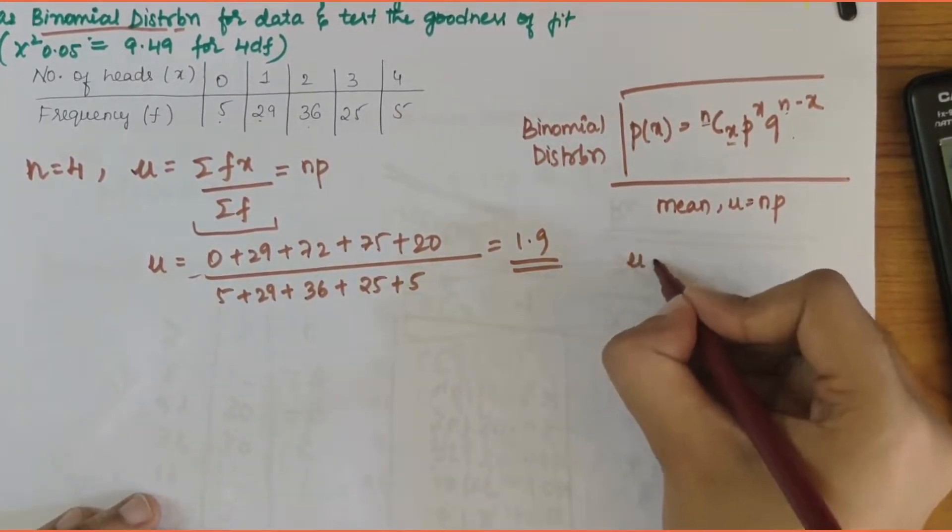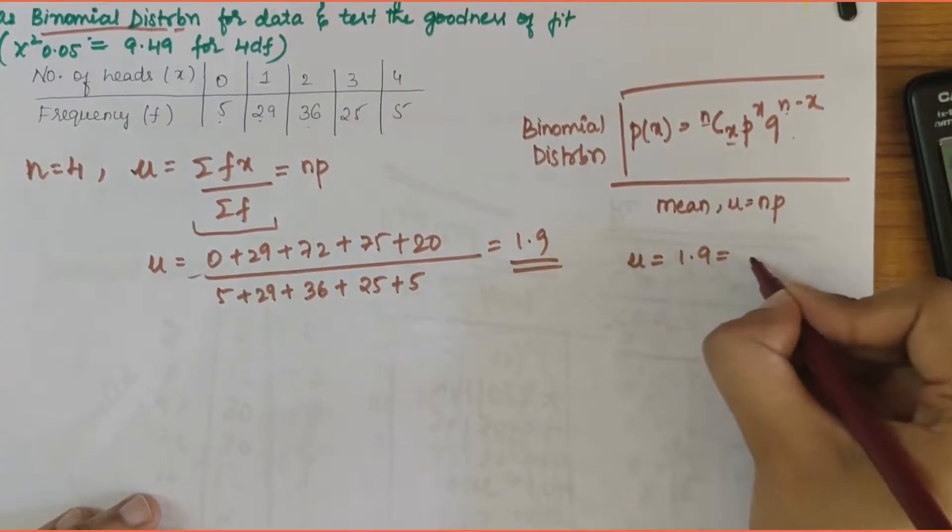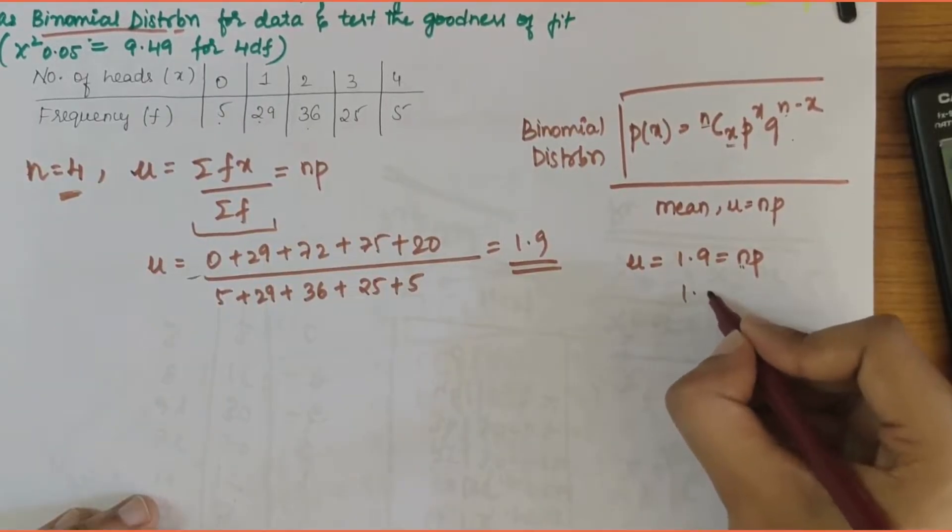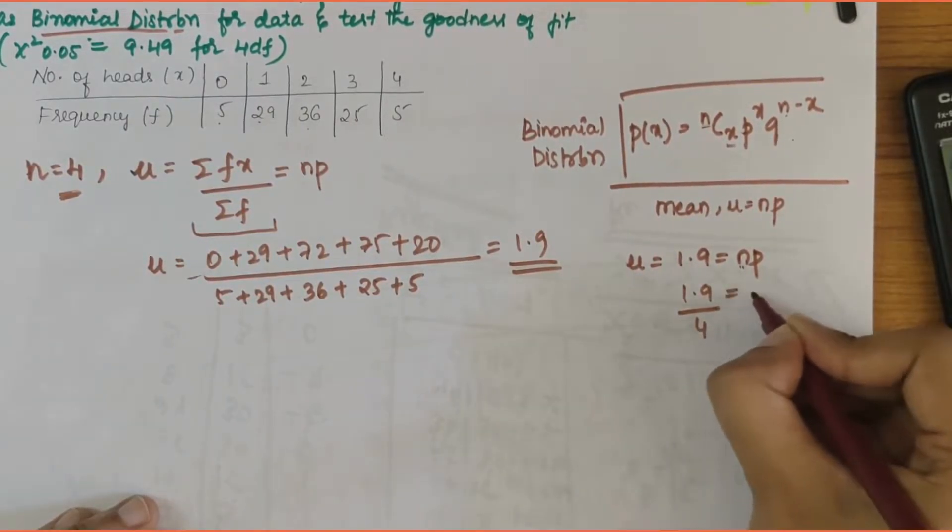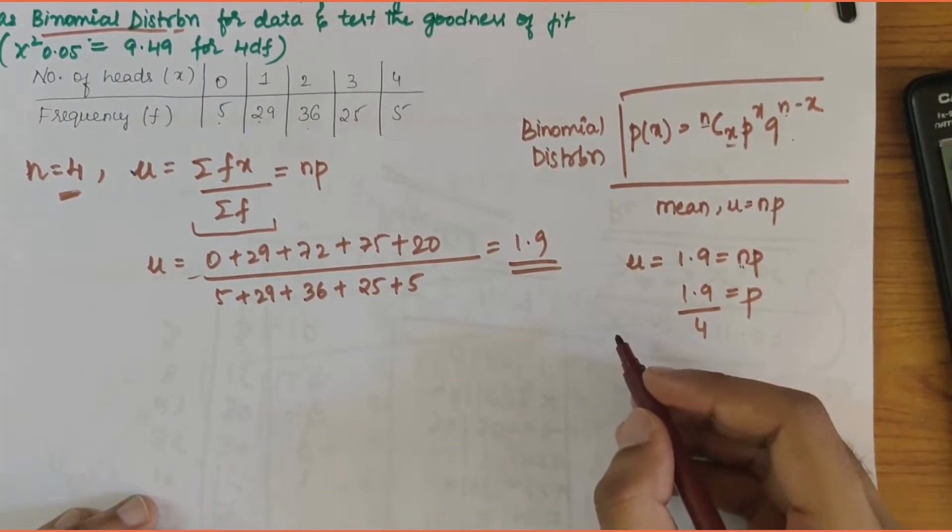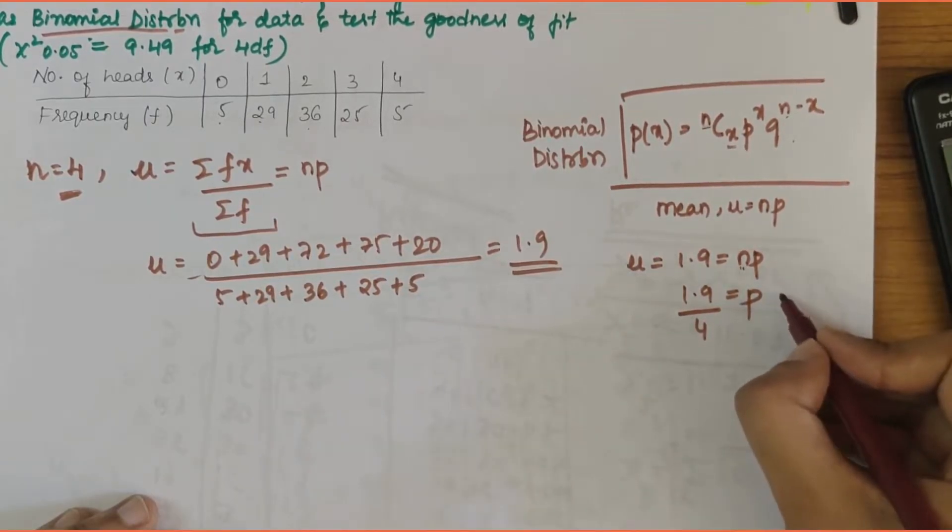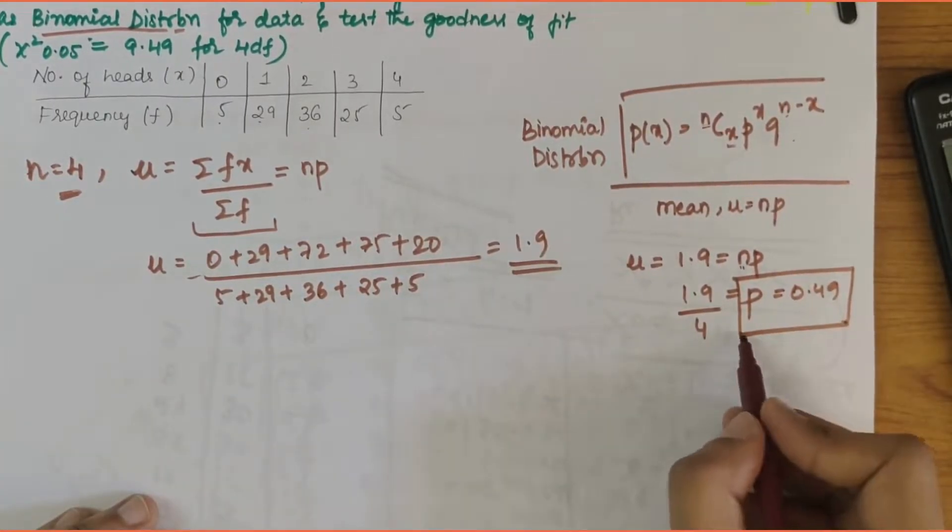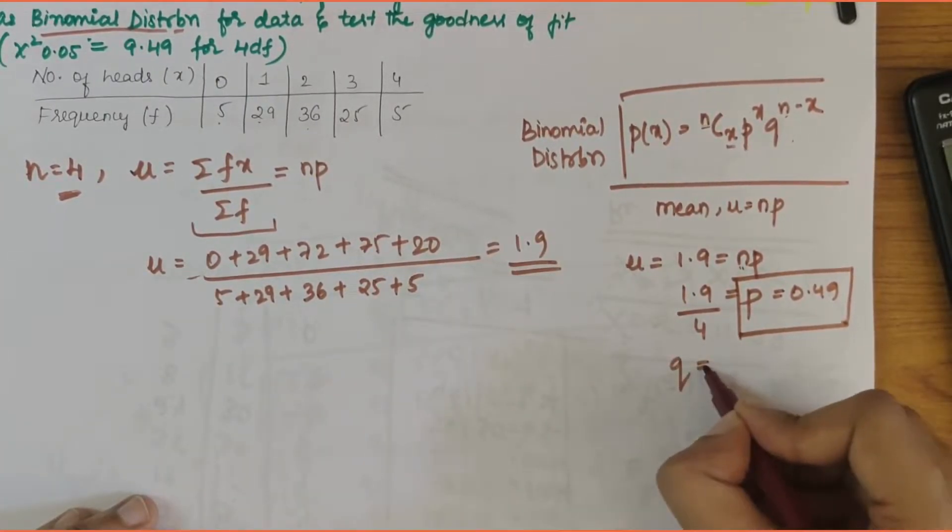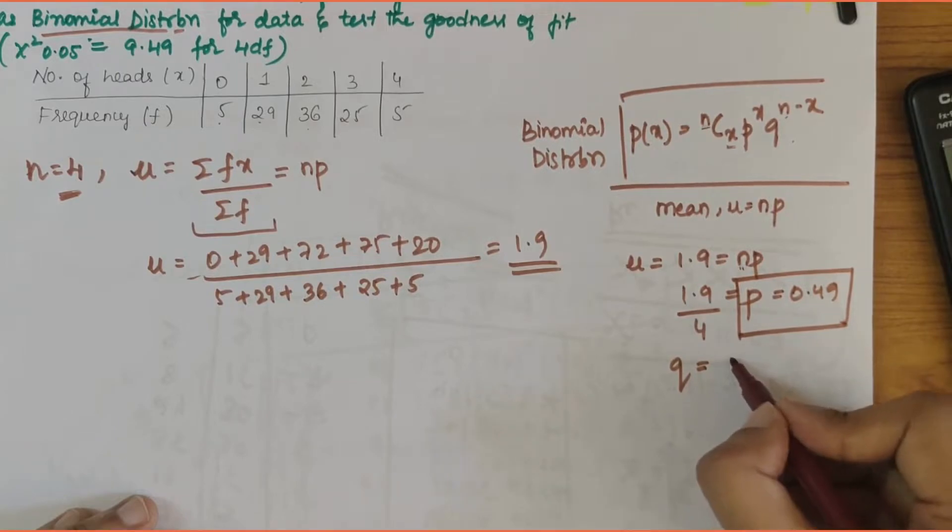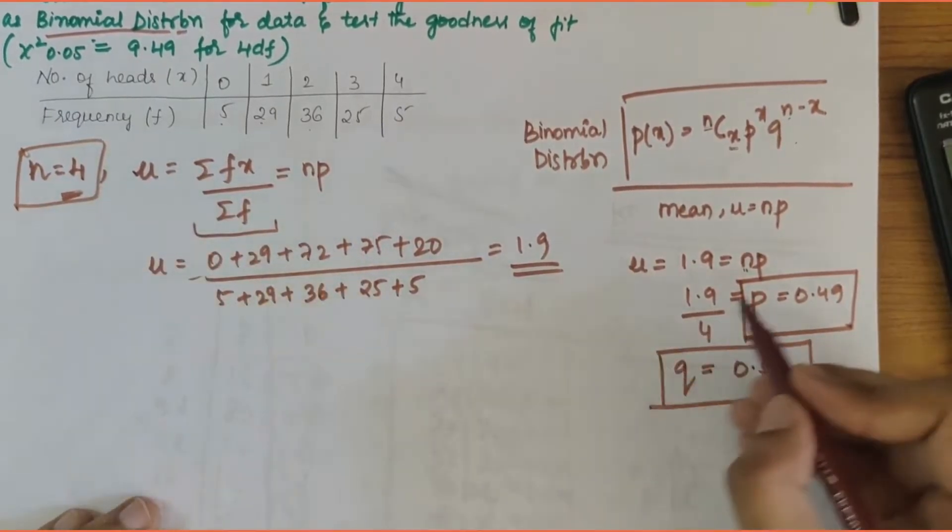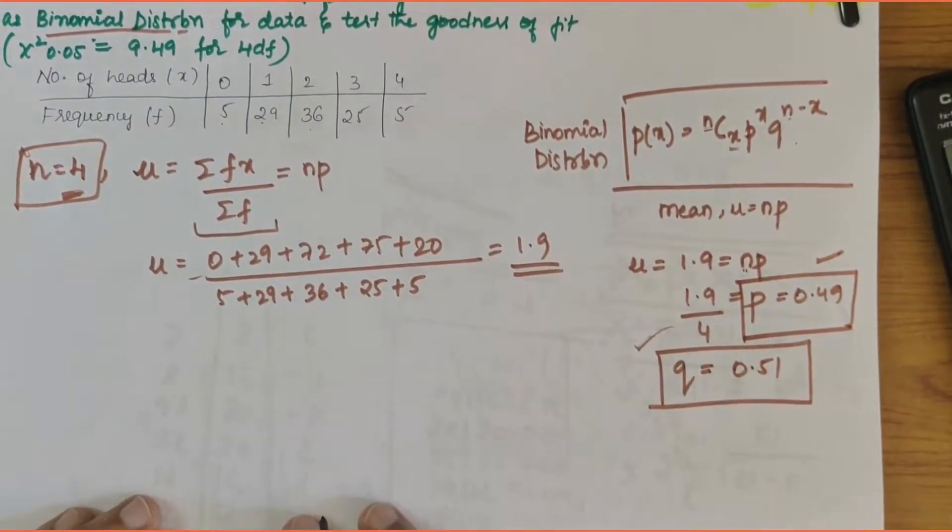So we have mu equal to 1.9 which equals np. n value we know is 4, so 1.9 divided by 4 equals p. By this we can calculate the p value, that is 0.49. So if p value is 0.49, q would be 1 minus 0.49, that is 0.51.